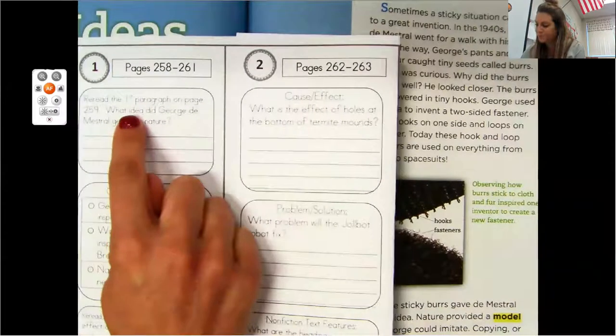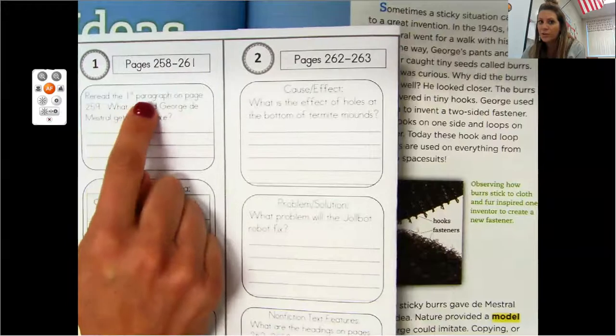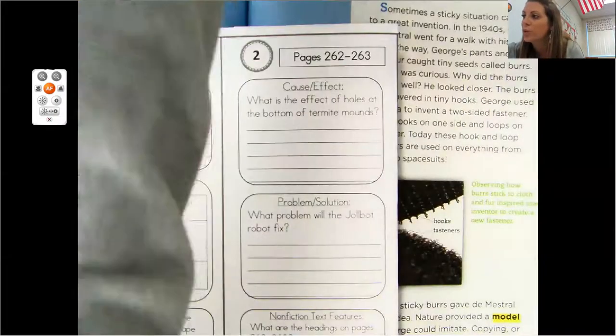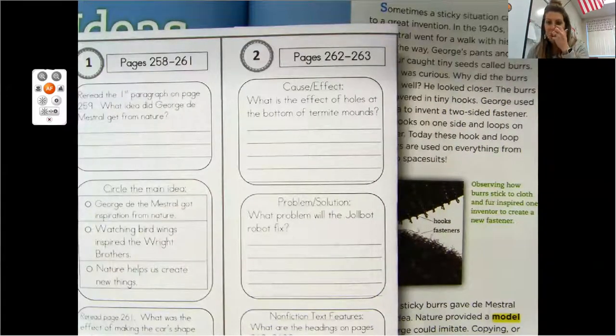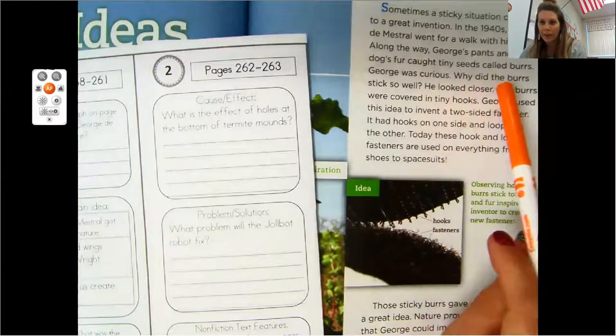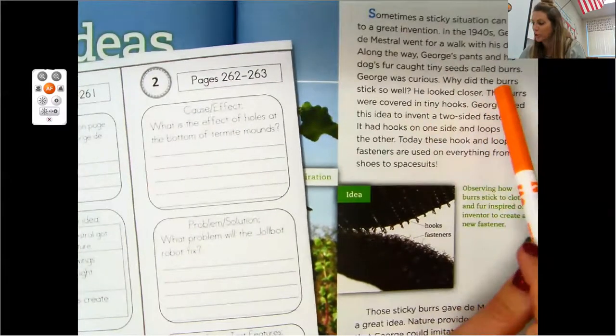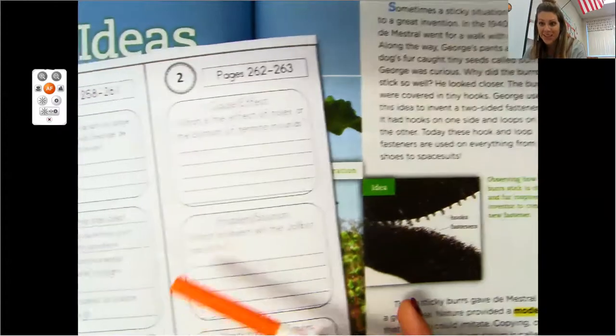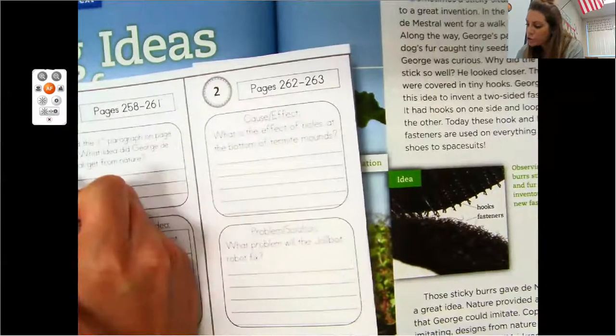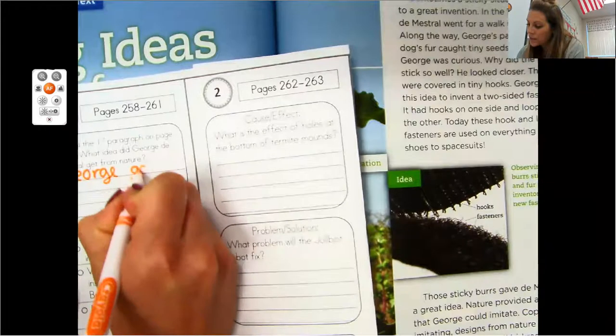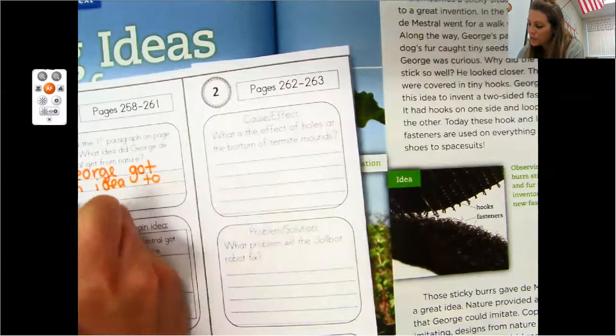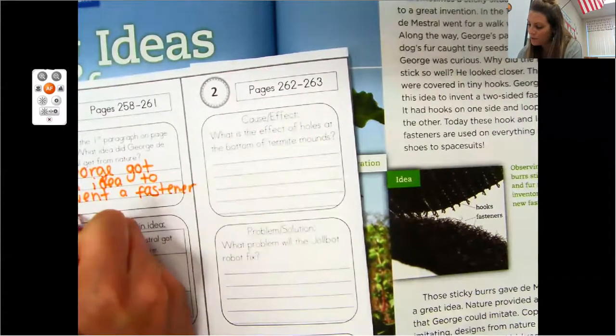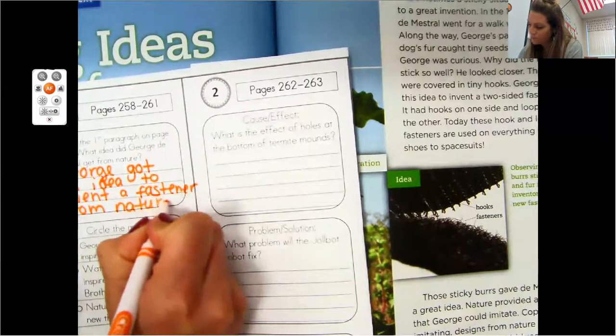So let's look at our first question here. Reread the first paragraph on page 259. So that's what we just read. What did George Day Mestral get from nature? What did he get? Do you know? Let's see. So remember he was walking and he got covered in those little burrs. The burrs were covered in tiny hooks. George used this idea. He got an idea to invent something, right? So what did George Day Mestral get from nature? George got an idea to invent a fastener from nature.